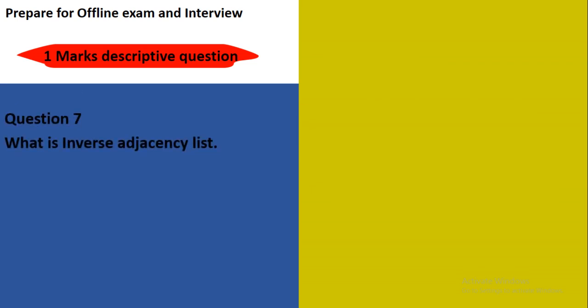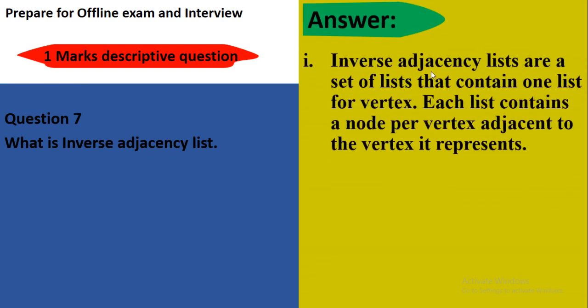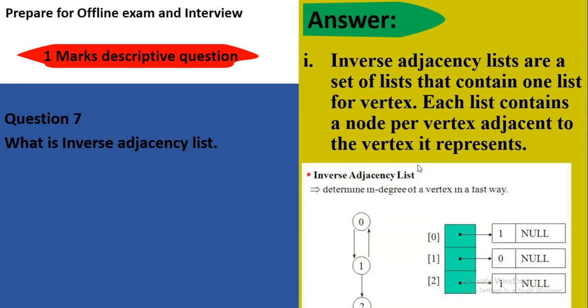Next question: What is inverse adjacency list? Inverse adjacency lists are a set of lists that contain one list per vertex. Here contains one list per vertex. Each list contains a node per vertex adjacent to the vertex it represents. Here is one graph and a list of lists. It determines the in-degree of vertices.